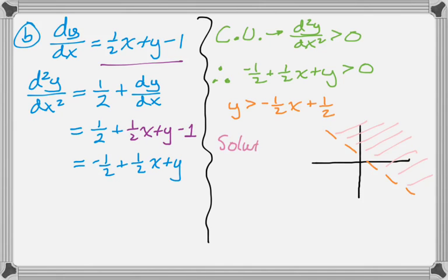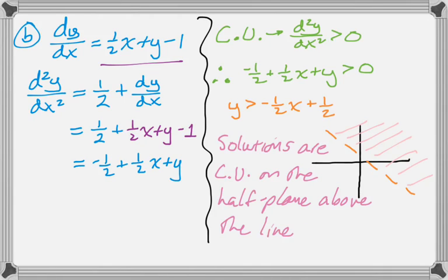And then I'll just write a verbal description. So the solutions are concave up on the half of the plane that's above the line y equals negative 1 half x plus 1 half. And I guess that's kind of what they're looking for.